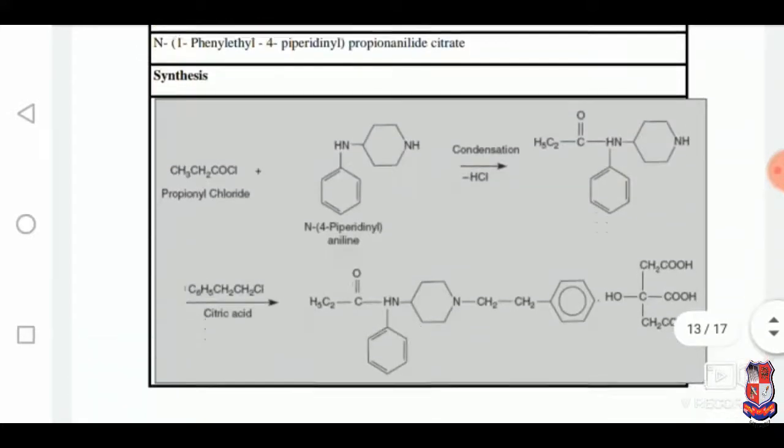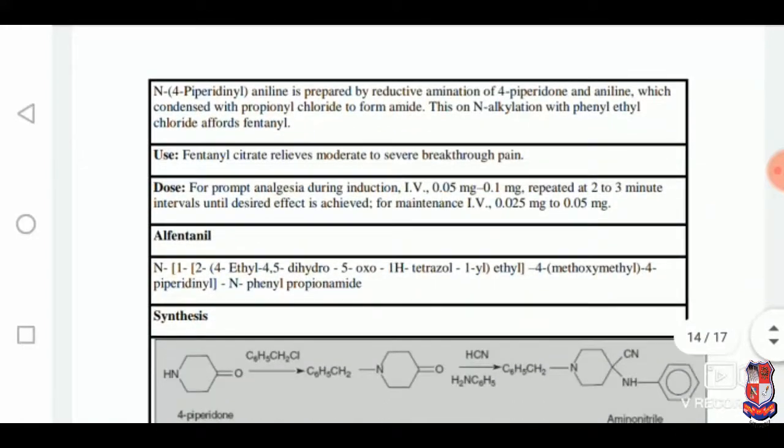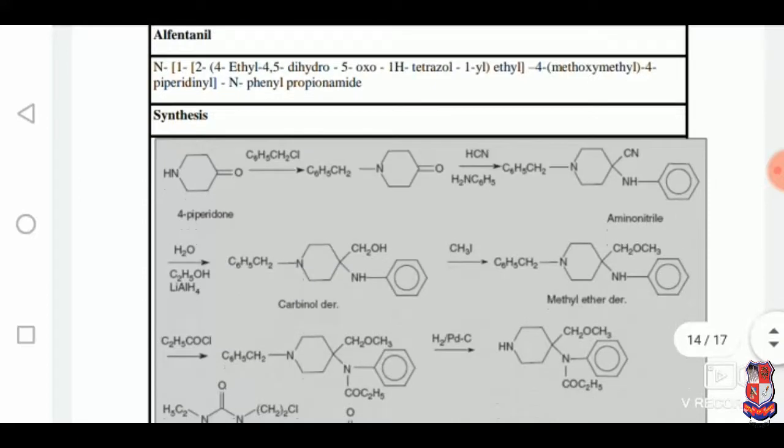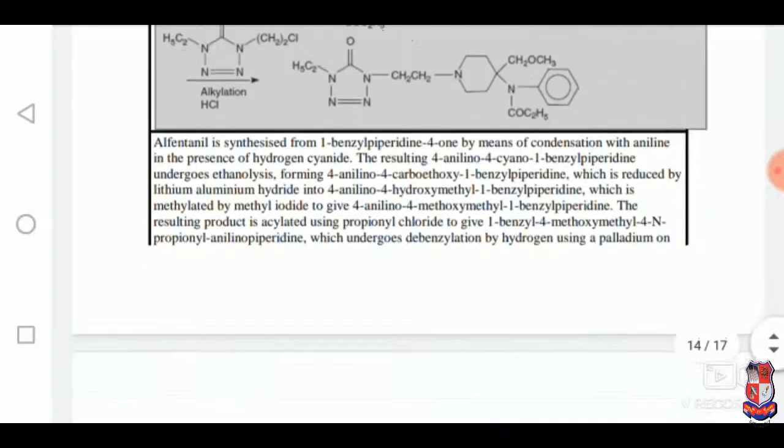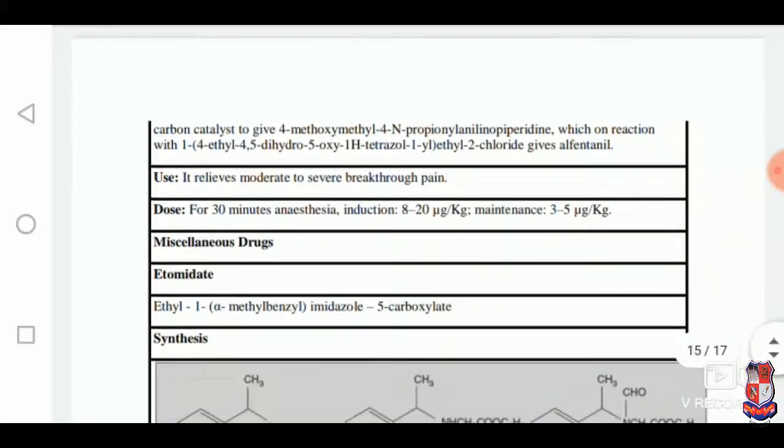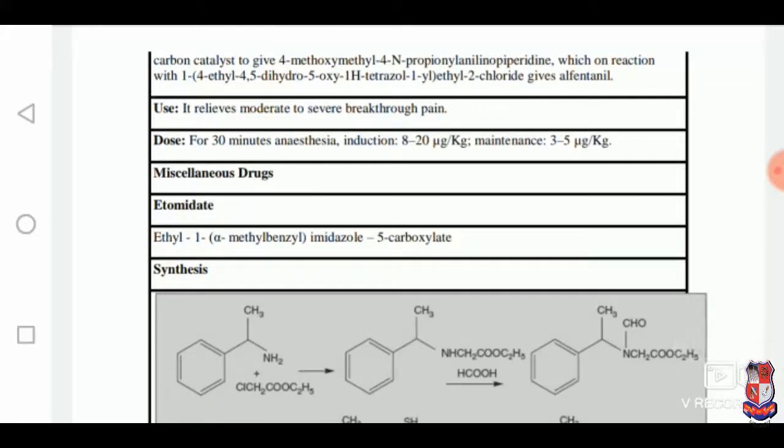Narcotic anaesthetics: fentanyl is synthesized from propionyl chloride. Its main use is to relieve moderate to severe breakthrough pain. Alfentanil is synthesized from 4-piperidone and is used to relieve moderate to severe breakthrough pain, same as fentanyl.